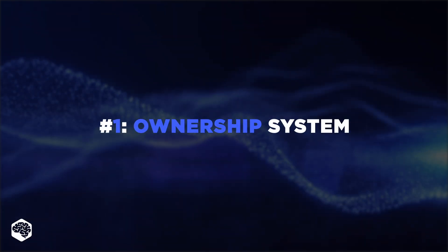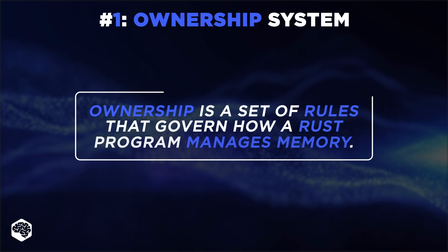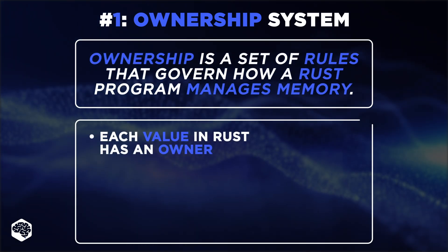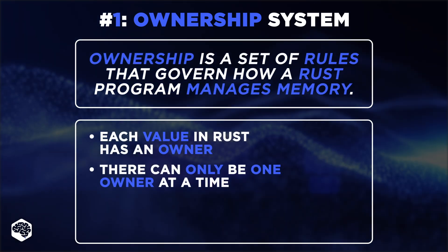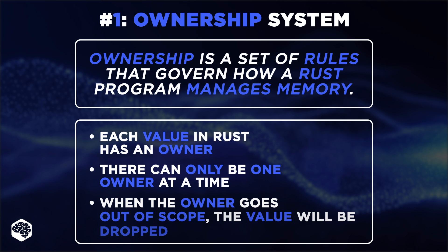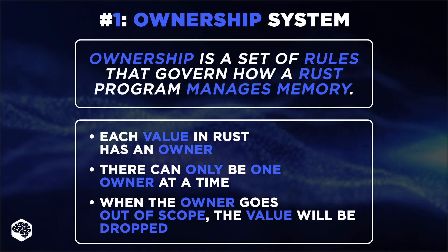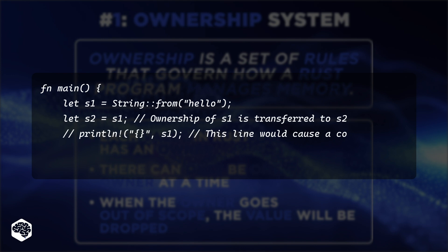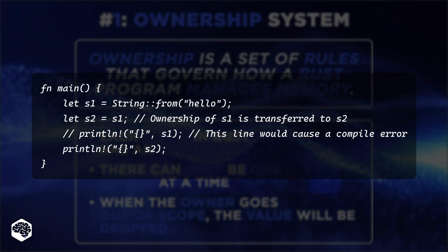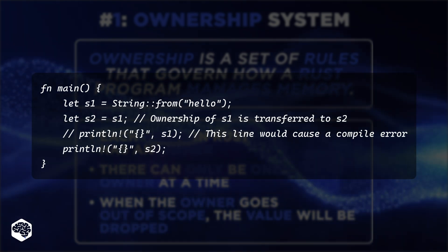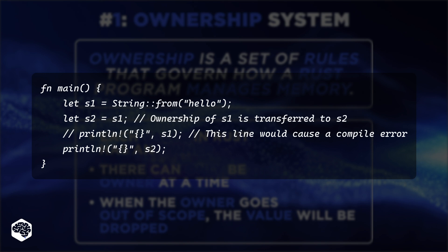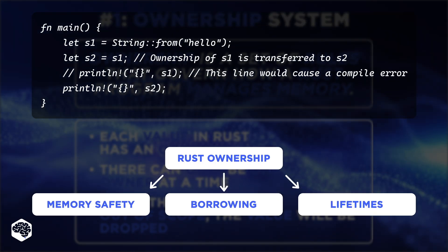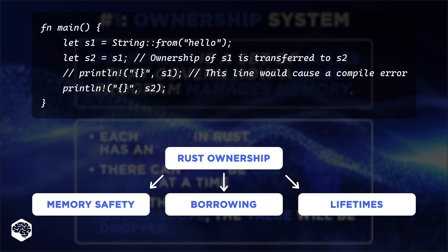Number one on our list is Rust's ownership system, which is unique and fundamental to understanding how Rust works. In Rust, every value has a single owner, and ownership can be transferred or borrowed as needed, ensuring safe memory management without a garbage collector. As demonstrated in the code, ownership of a string is transferred from S1 to S2, making S1 invalid and preventing its use. This prevents common issues like dangling pointers and data races.